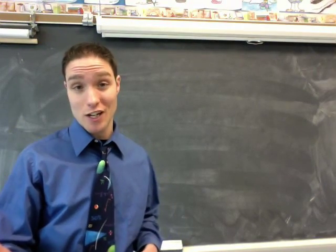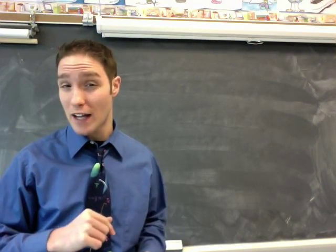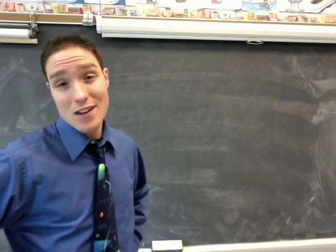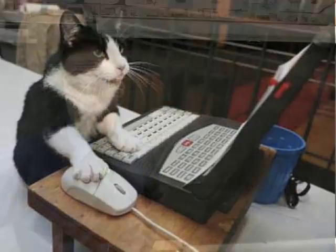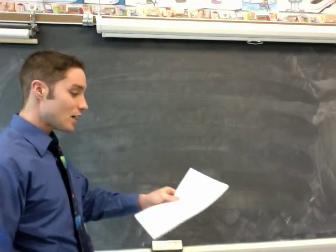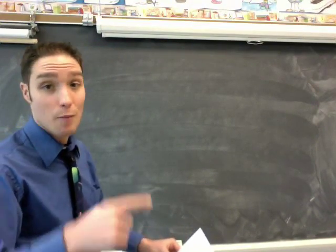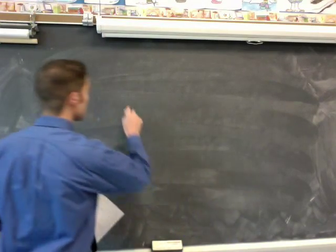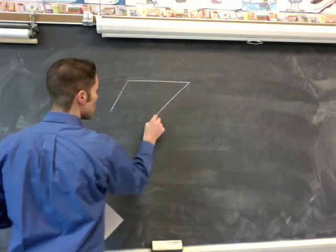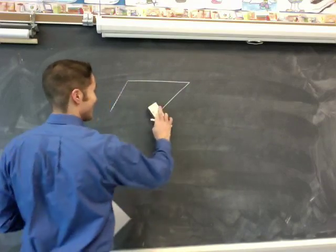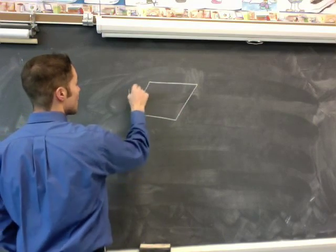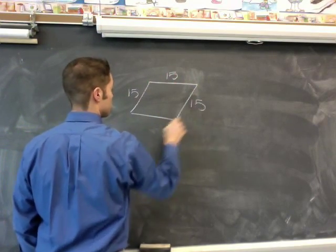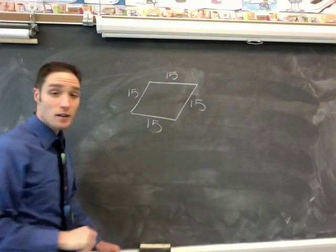Let's do number 10 from your review sheet. This one's about rhombi, which is the plural of rhombus. I used to have a cat named Rhombus, by the way. I think I told you all that. She was so cute, just like a little rhombus. So anyway, let me read this problem. If the side of a rhombus is 15, remember a rhombus has all equal sides, so if one of them is 15, they're all 15.